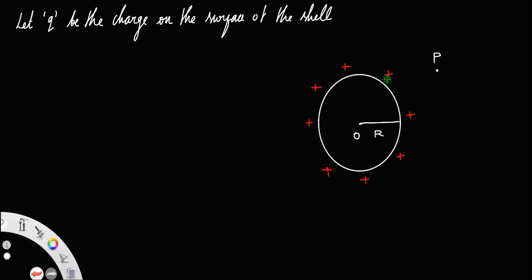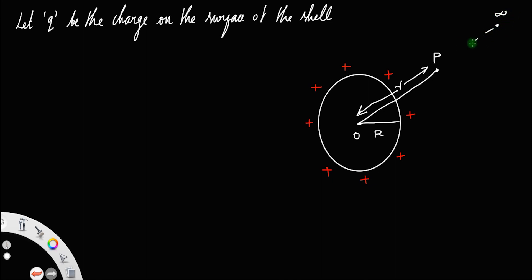We have to find the potential provided by this spherical shell at the point P outside the shell. Let the distance between the point O, that is the center of the shell, and the point P be some r — this distance is equal to r. What basically this potential at point P means is the work done to bring a unit positive charge from infinity to that point P. That is, if you bring one coulomb of charge from infinity to point P, that is the potential at point P.